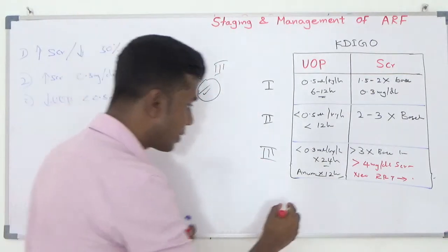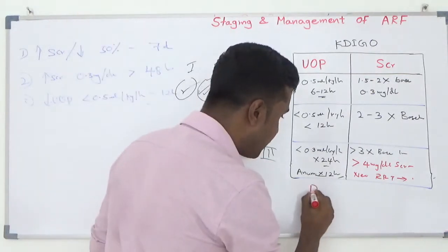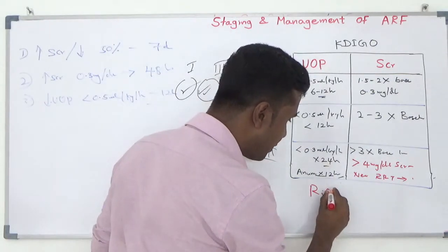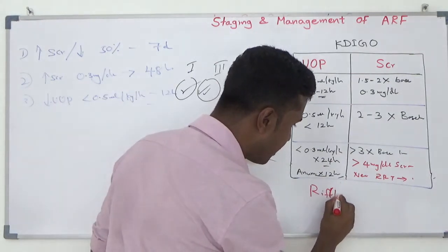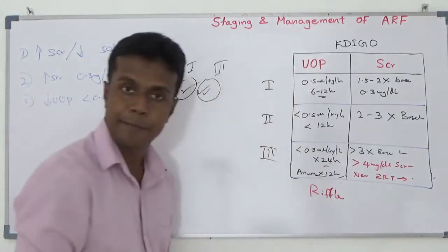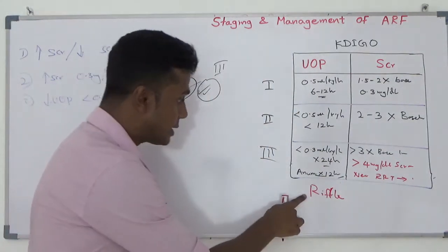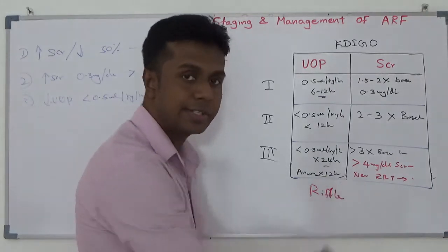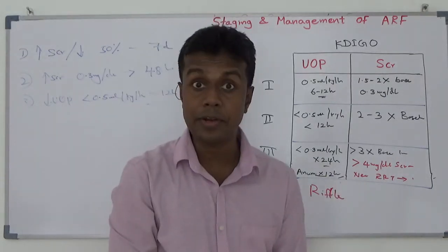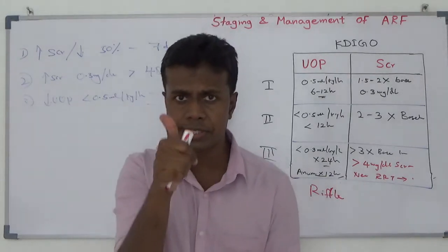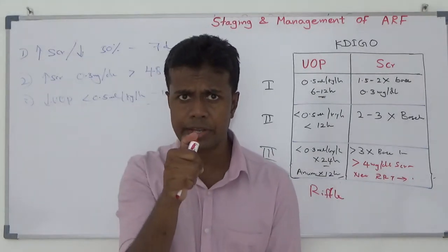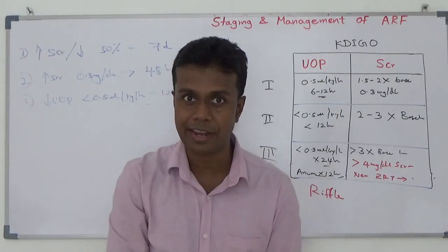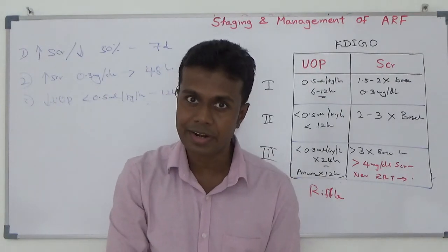One criteria is the RIFLE criteria — R stands for Risk, I for Injury, F for Failure, L for Loss, E for End stage. That is what RIFLE stands for.